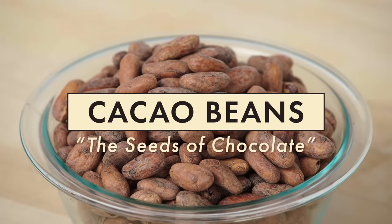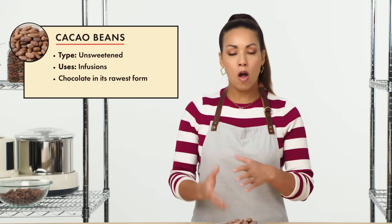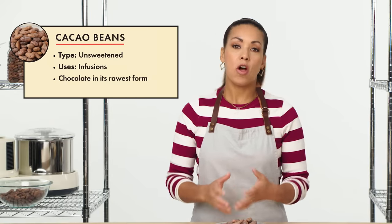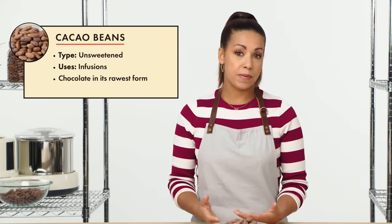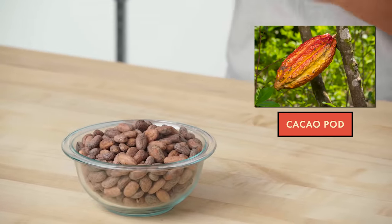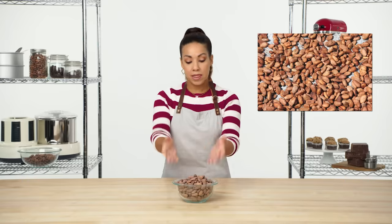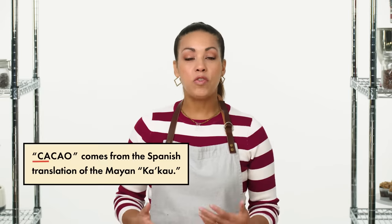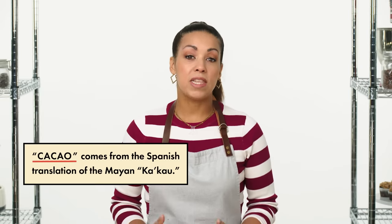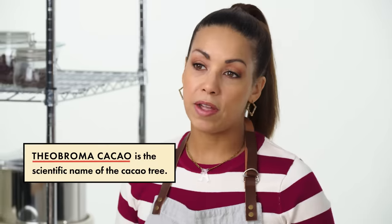Cacao beans are pretty much the most raw version of chocolate that you can buy. The cacao beans are taken from the pod growing on the tree, fermented and dried, and that's exactly what you see here. The cacao tree is thought to have originated in the upper Amazon region, and then the growth of the tree spread to Central and South America.